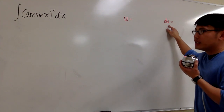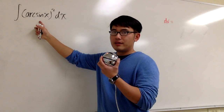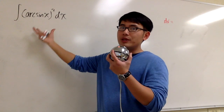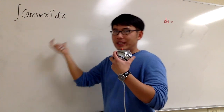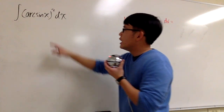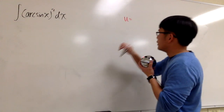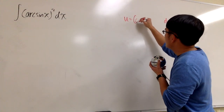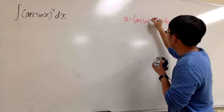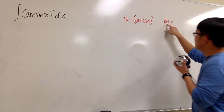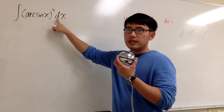Worry about the dv first. We only have one part here, so we shouldn't pick this for dv, otherwise we get back to the original question. Arc sine x to the second power will be u, and for the dv it will be just dx.